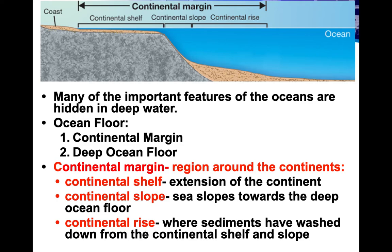Many of the important features of the oceans are hidden in deep water. When we look at the ocean floor, we have the continental margin and the deep ocean floor. The continental margin has three parts: the continental shelf, which is simply an extension of the continent; the continental slope, where the sea floor drastically drops off toward the deep ocean; and the continental rise, where sediments have washed down from the shelf and slope. Think of 'margin' like document margins — it's what's on the outside of the continents.